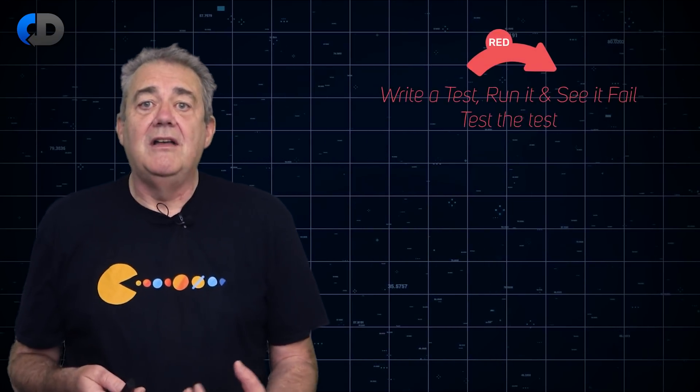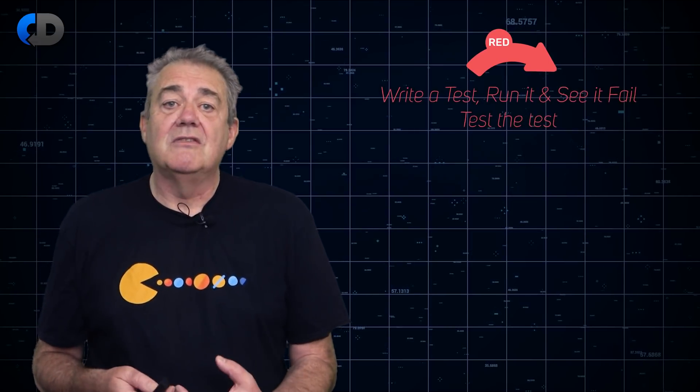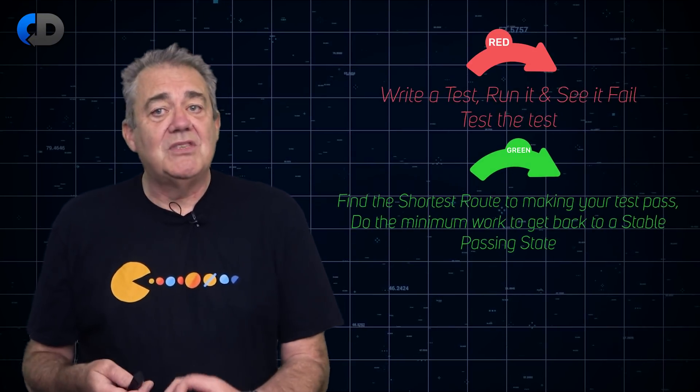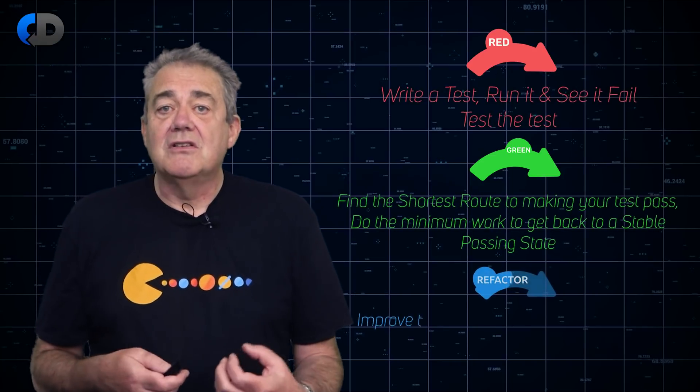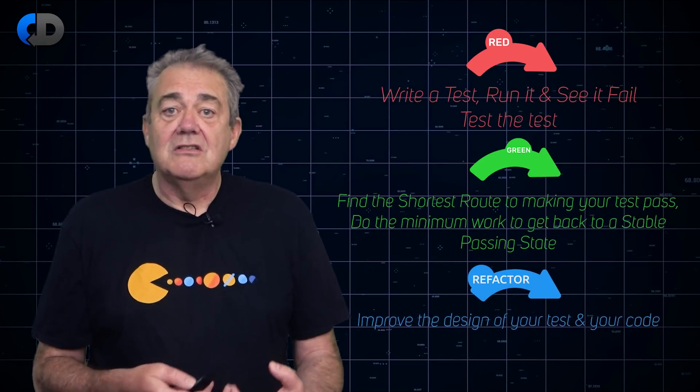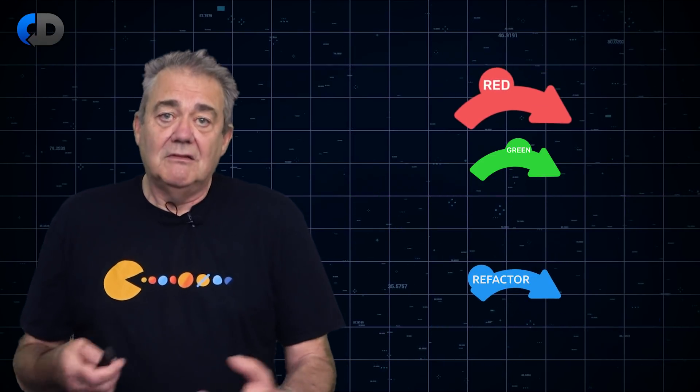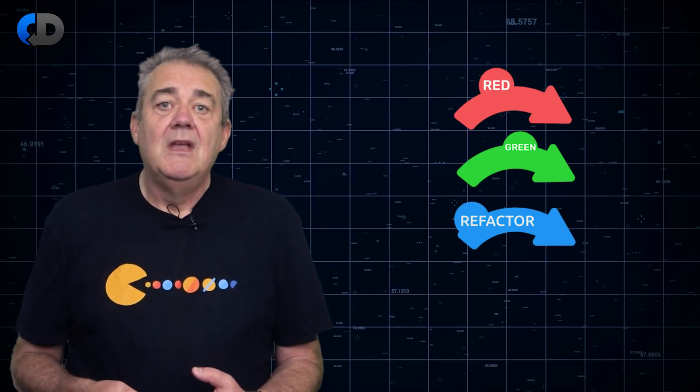The three mindsets at the core of test-driven development are: we focus first on the design of the external experience of our code — what it does, not how it does it. Next, we take the smallest, simplest steps to make it work. And finally, we focus on the internal design of our solution to make it great. Red, green, refactor.